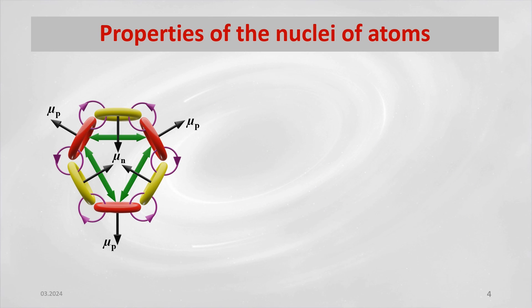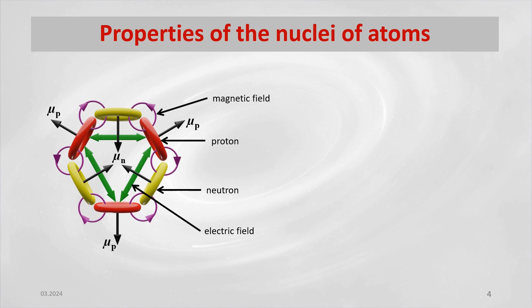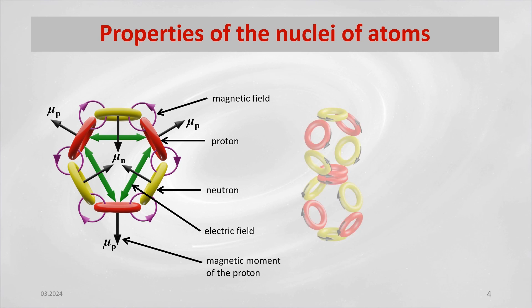Nucleons in an atomic nucleus assembled according to the model of ring theory have their magnetic moment. The rotations of the charges are bound to neighboring nucleons by means of magnetic field components, and thus form deterministically and explicitly defined bonds. They are describable at any point in time like a familiar system from an automobile transmission.